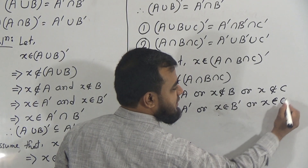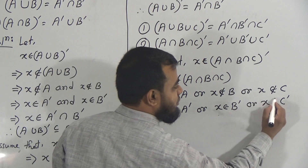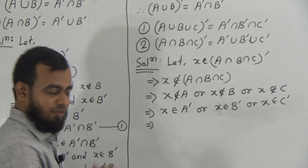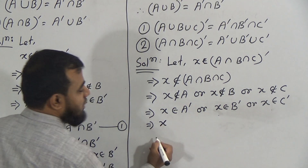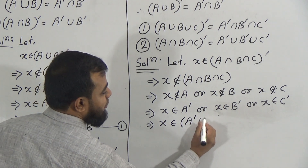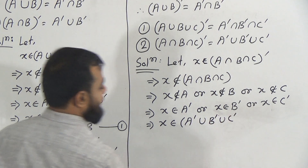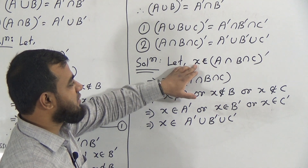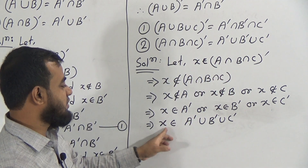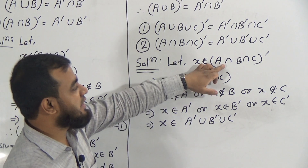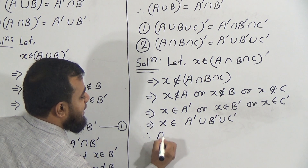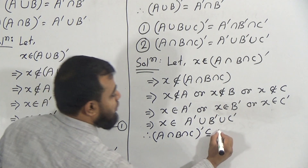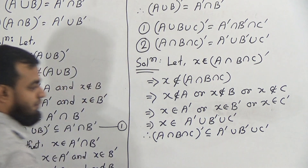In place of 'or' we use the union sign. So x belongs to A prime union B prime union C prime. We supposed x belongs to A intersection B intersection C whole prime and proved x belongs to A prime union B prime union C prime. Therefore, A intersection B intersection C whole prime is a subset of A prime union B prime union C prime. This is equation number one.